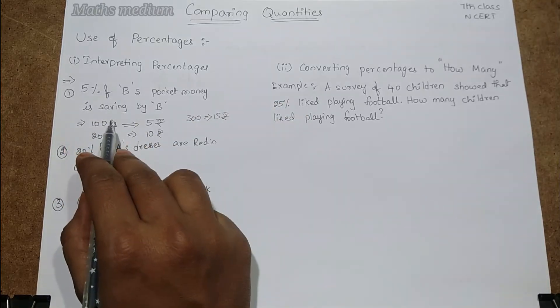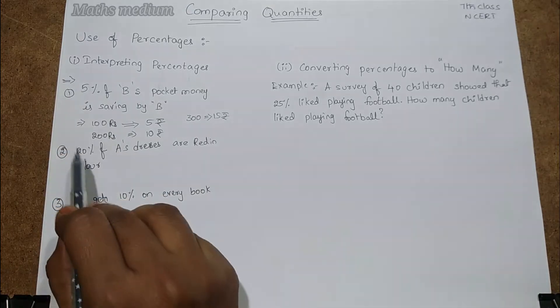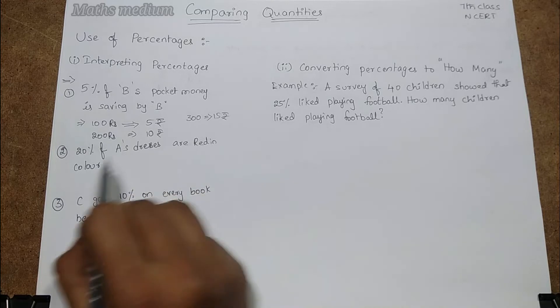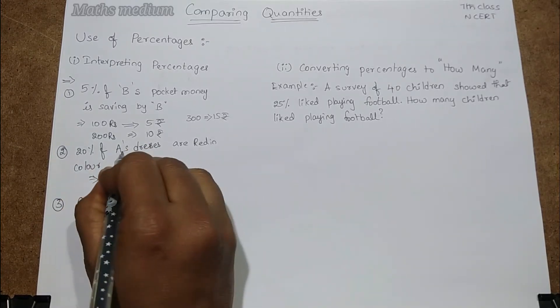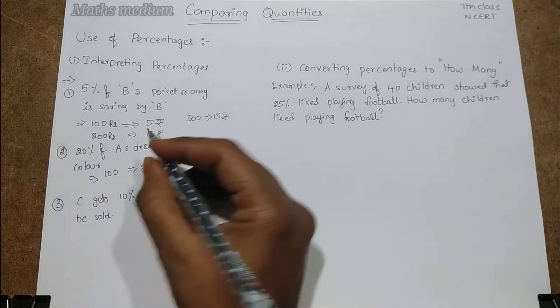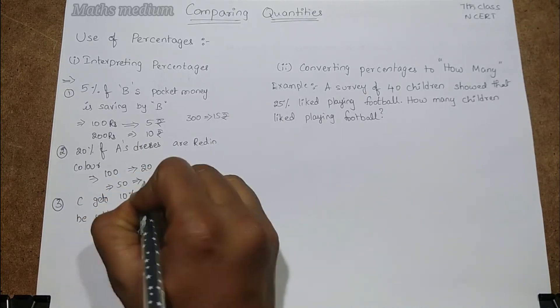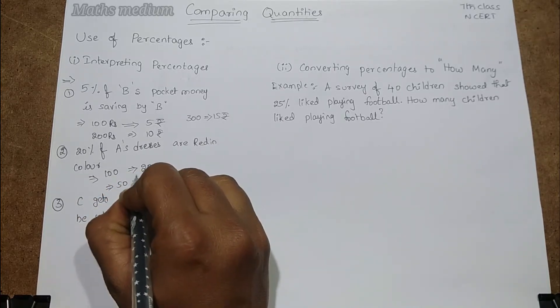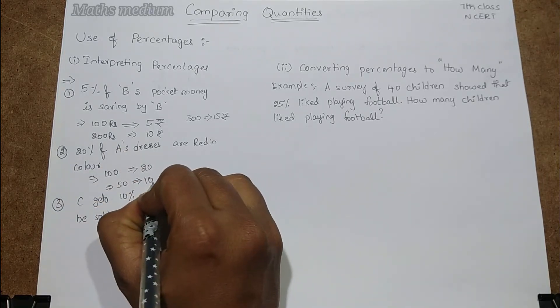That is the interpreting of the percentages with given relevant matter. Here also 20% of A's dresses are red in color. If you take 100 dresses are there to A, then how many dresses are red in color? 20 obviously. If you take total dresses of A is having 50, then how many dresses are in red color? 20% means 10 dresses are in red color.